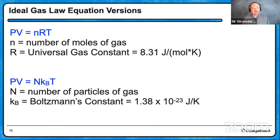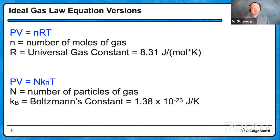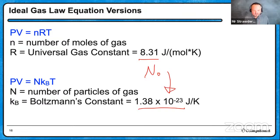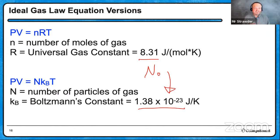Putting it all together: the ideal gas law. The top version is PV = nRT, where n is number of moles. The bottom version uses capital N for number of particles, with Boltzmann's constant k_B. You get k_B by dividing R (8.31) by Avogadro's number. I didn't graph the law for changing number of particles — that's Avogadro's law — but for time's sake I cut it a bit short.